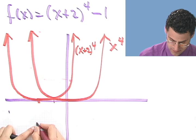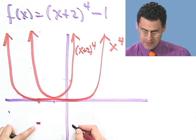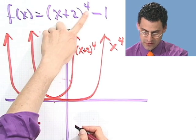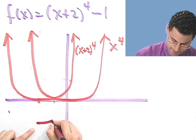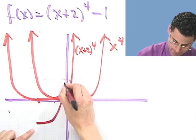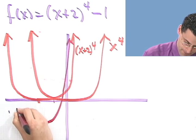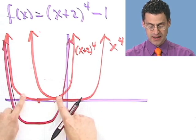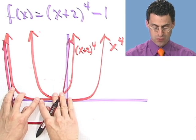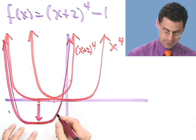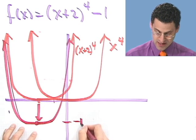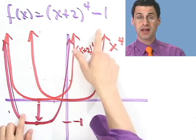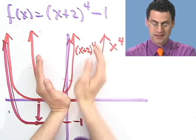Let me put in the intercepts carefully. When x = 0, this is 2 to the fourth minus 1, which is some large positive number. So it's literally the shifted x⁴ picture shifted down one unit. This point right here has a height of -1. You can see the way to graph something like this — though it looks complicated — is just to see the essence of it, graph the essence, and then build from there.